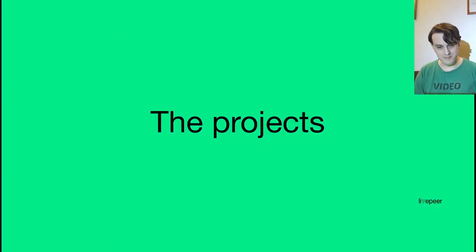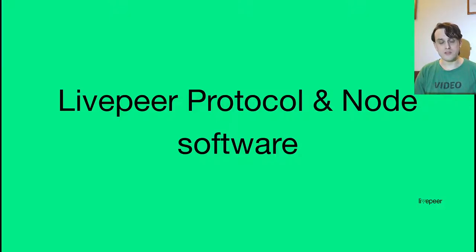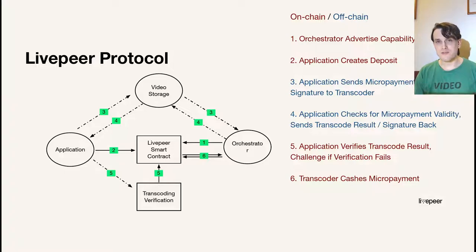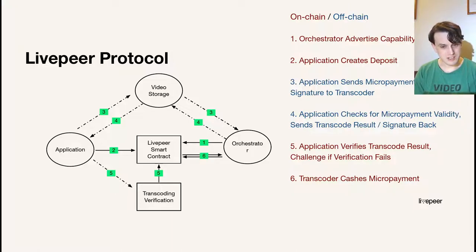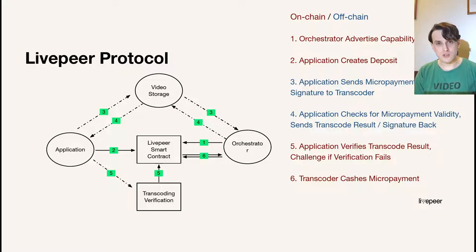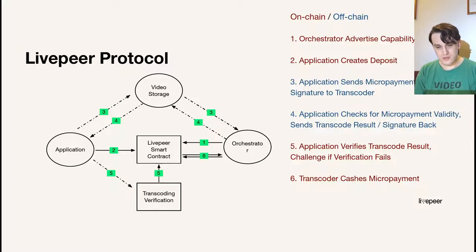So what are these projects? Let's get into them. First, there's the Livepeer protocol and node software. The Livepeer protocol does stuff on the blockchain, and it works with three types of nodes: the orchestrator node, the broadcaster node, and the transcoding node. The broadcaster — represented as the application in the diagram — has something it needs transcoded. Livepeer is mostly about video transcoding, just in case I hadn't mentioned that. The broadcaster puts a request for transcoding to the orchestrator, who does the transcode work, uploads the transcoded video, everything is verified, and the orchestrator gets paid.